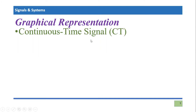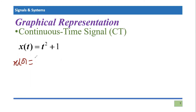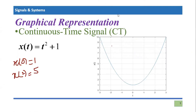Now we discuss graphical representation, starting with the continuous time domain. For example, take a signal X(T) whose definition is T squared plus one. To plot it, we put in values: X(0) equals zero squared plus one equals one. Taking T equals two: two squared plus one equals five. You can take various values from minus infinity to plus infinity and draw it. The signal looks like a parabola — a continuous time signal defined for every point within the time interval. For example, at a specific point it might be 0.5, or near one it could be 1.1 or 1.21.